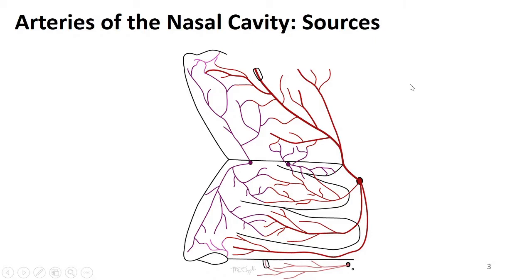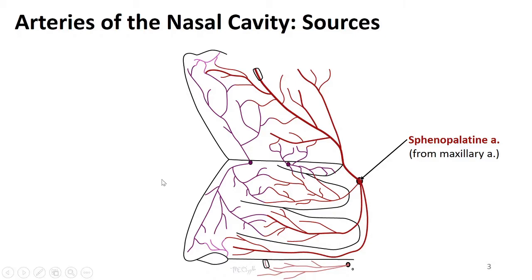Let's walk through some of the major sources of the arteries to the nasal cavity. We're going to start with the sphenopalatine artery — remember this as one of the terminal branches of the maxillary artery after the pterygopalatine fossa. As it passes through into the nasal cavity it gives off a lot of branches, so this is an important artery in terms of the vasculature in the nasal cavity.